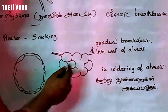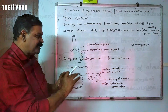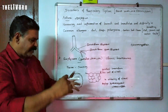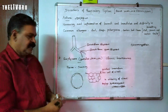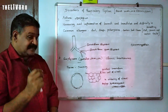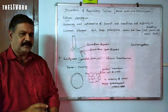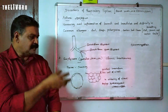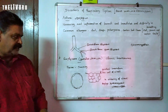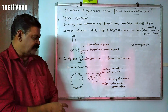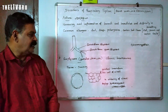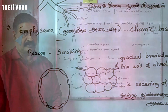Emphysema involves widening of the alveoli due to rupture of the thin walls of the alveoli. This widening of the alveoli is the defining feature of emphysema.